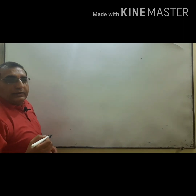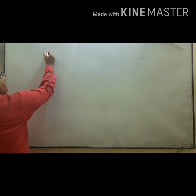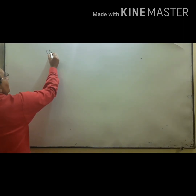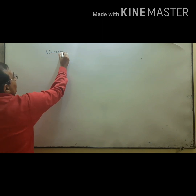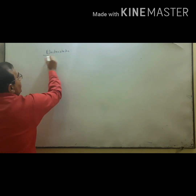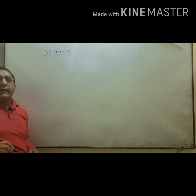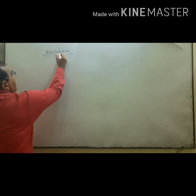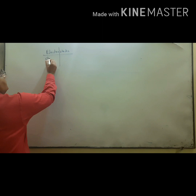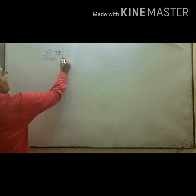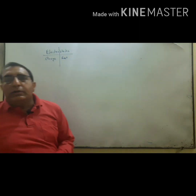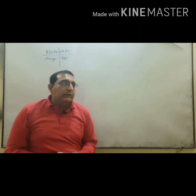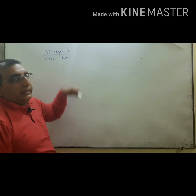The first unit of Class 12 is electrostatics. Electrostatics is made of two words: 'electro' meaning electron or charge, and 'static' meaning rest. Electrostatics is the branch of physics which studies charge at rest.